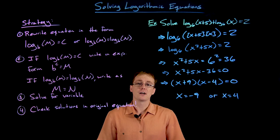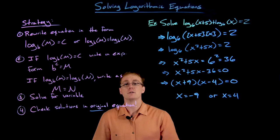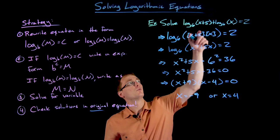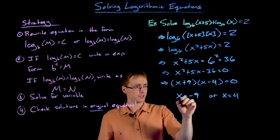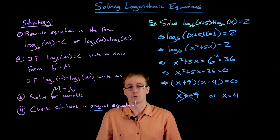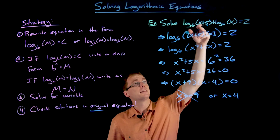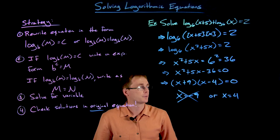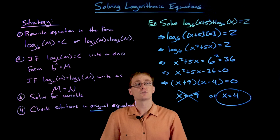We are not done until we've checked our solutions in the original equation. Plugging in x equals negative nine gives log of negative four plus log of negative nine — we can't take logs of negative numbers, so we kick that solution out. Checking x equals four: log base six of nine, which is positive, plus log base six of four, which is positive — that works. We don't need to check the rest of the arithmetic; since the insides of our logarithms are positive, x equals four is our solution.